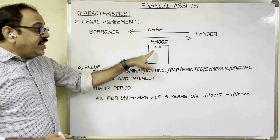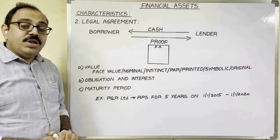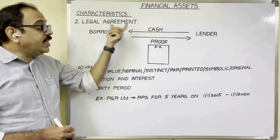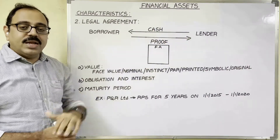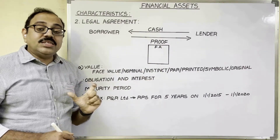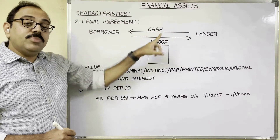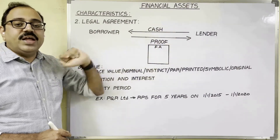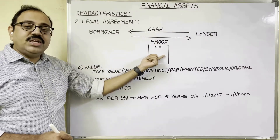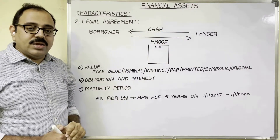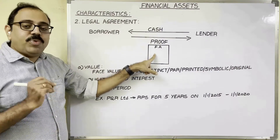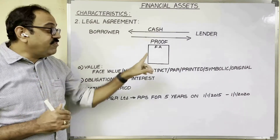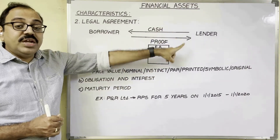Obligation and interest: a financial asset represents obligation and interest. Obligation means responsibility — it creates responsibility for the borrower to pay the financial asset amount to the lender on a particular date. It also represents the interest of the lender, where interest means right. The lender has the right to receive returns from the borrower. For example, if the lender purchased shares, the return is dividend. If the lender is a fixed deposit holder, the bank issues an FDR (Fixed Deposit Receipt) as a financial asset, and the lender has the right to receive interest from the bank.